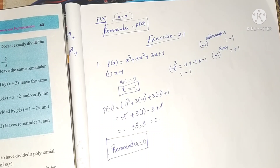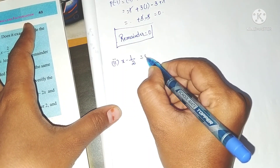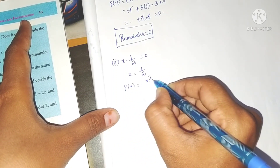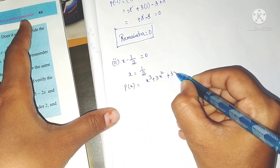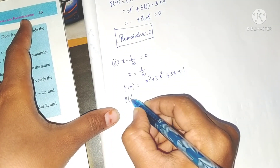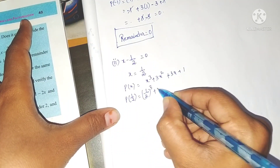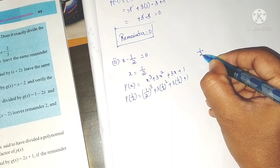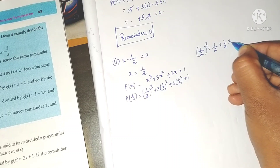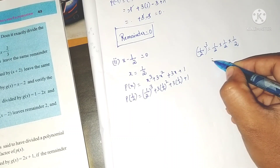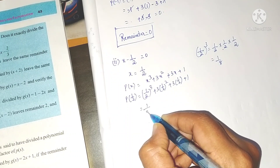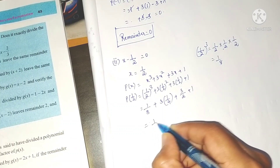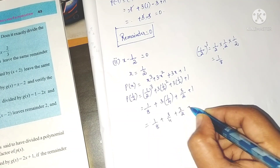Next, the second part: x - 1/2. Take x - 1/2 = 0, so x = 1/2. Now substitute 1/2 in place of x in p(x). We get: (1/2)³ + 3(1/2)² + 3(1/2) + 1. Now (1/2)³ = 1/8, and (1/2)² = 1/4. So this becomes 1/8 + 3/4 + 3/2 + 1.